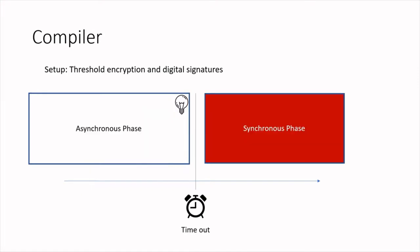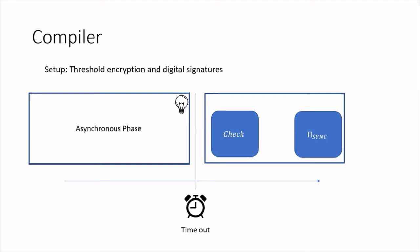Now let's go to the synchronous phase. This phase also has two boxes: the check box and the synchronous protocol. The task of the check box is to determine whether the bulb is on or off. If it is on, it must output y_async — the same output as in the asynchronous phase. If the bulb is off, check can output either y_async or bottom, but only one. If bottom is output, then the synchronous protocol is executed and the synchronous phase outputs y_sync.